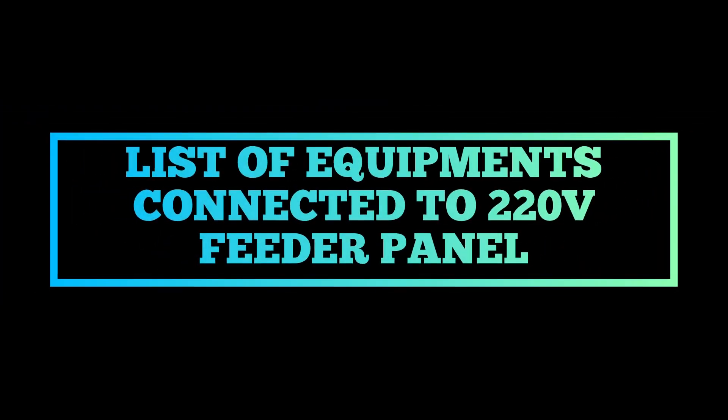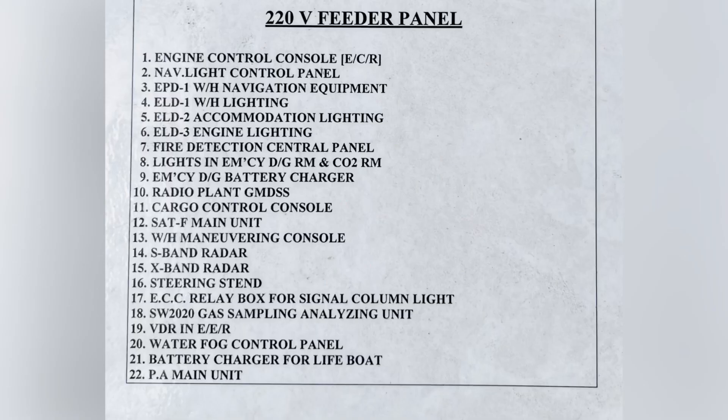In the 220 filter panel, you will basically find all your GMDSS equipment, control equipment which are connected with the control system connected with the cargo control room, bridge equipment, your fire detection system, and your HYPERMIST system. All these equipment are connected with 220.